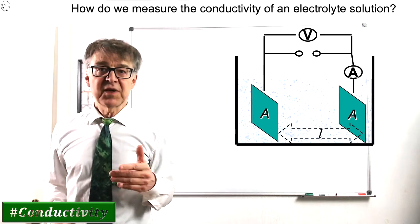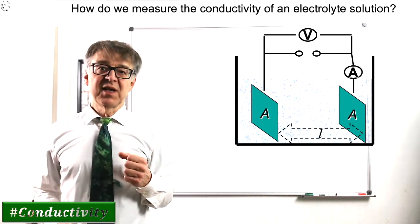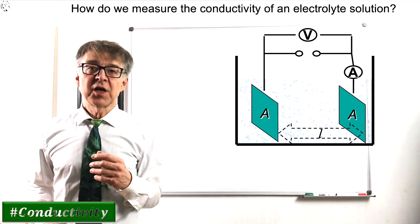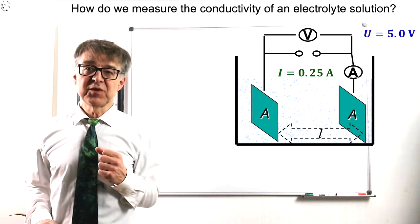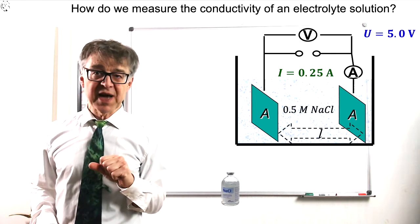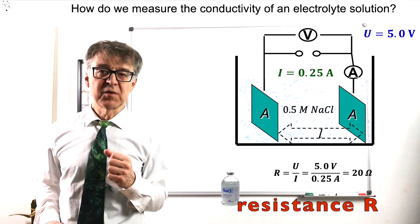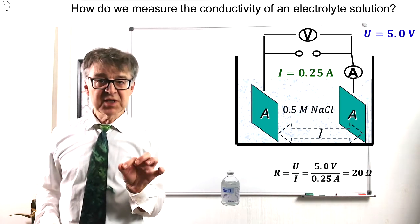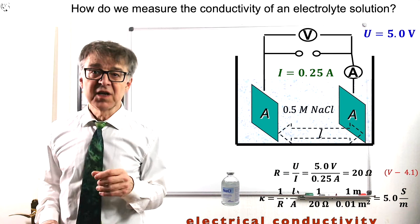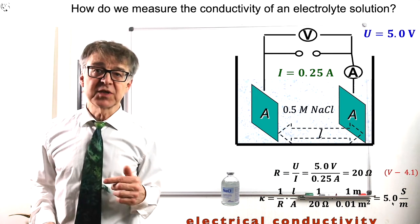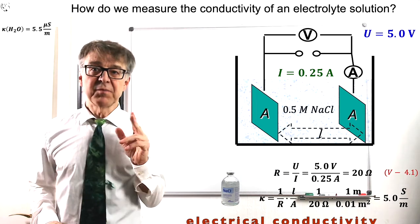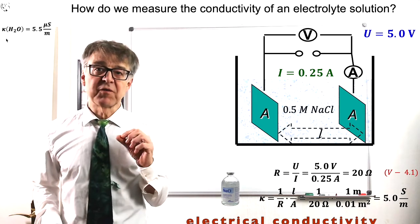The conductivity of an electrolyte can be measured using a classical electrical circuit with voltmeter and ammeter. If we put our 0.5 molar saline solution into this test setup and apply 5 volts, 0.25 amps will flow. This corresponds to a resistance of 20 ohms. The electrical conductivity kappa scales resistance in respect to size and distance of the electrodes, so we end up with kappa equal to 5 Siemens per meter. This is a million times larger than the conductivity of pure water.